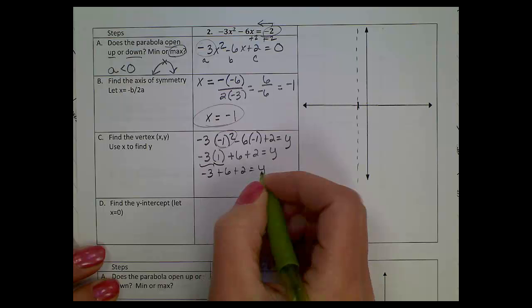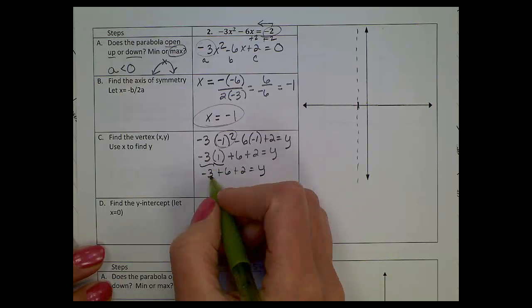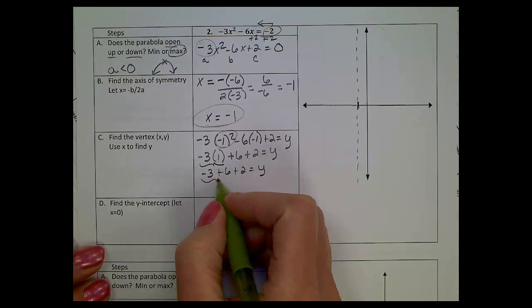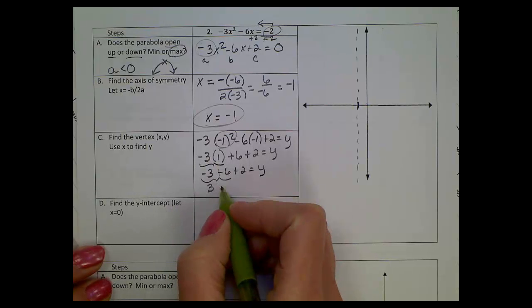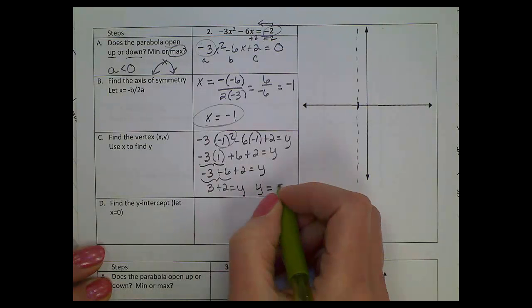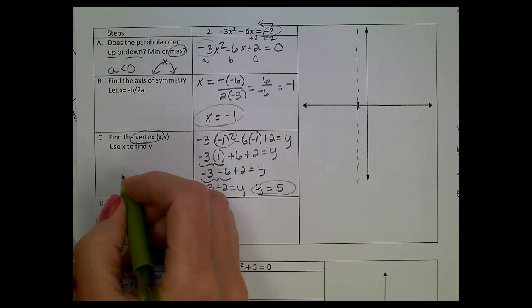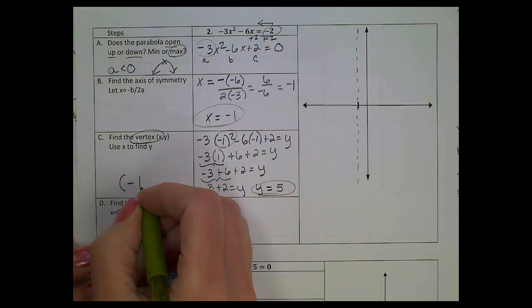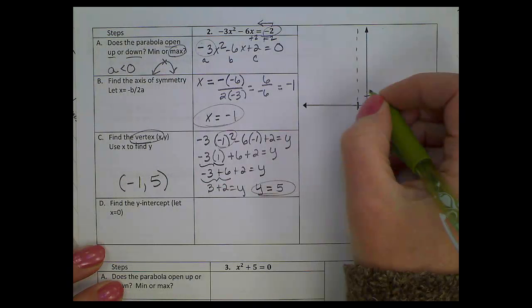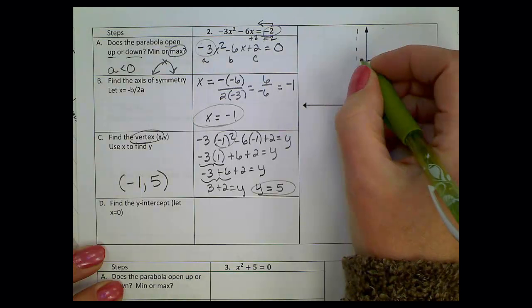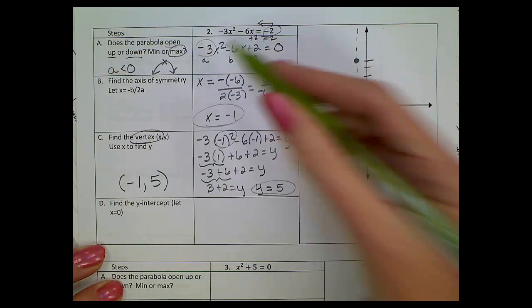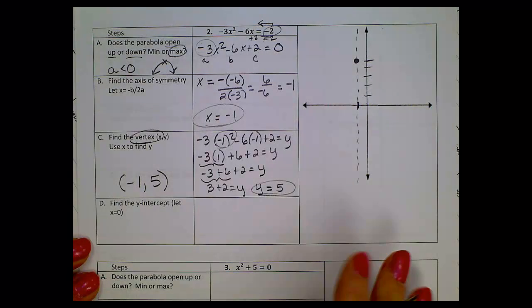Okay, sorry about the announcement. Order of ops says we square this term first, so we'll have -3(1). Negative times a negative will give me a positive six, plus two equals y. Negative three times one gives me negative three. Now to simplify this further, -3 + 6 will give me a positive three, plus two equals y. Finally, y will equal positive five. So for my vertex, I've got x = -1, y = 5. When I graph it, I go back one, up five. I know that this graph will be upside down because of the negative leading coefficient.